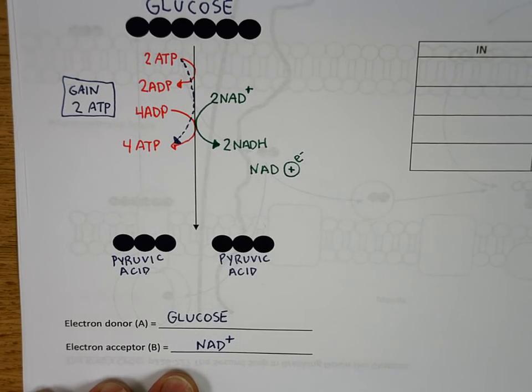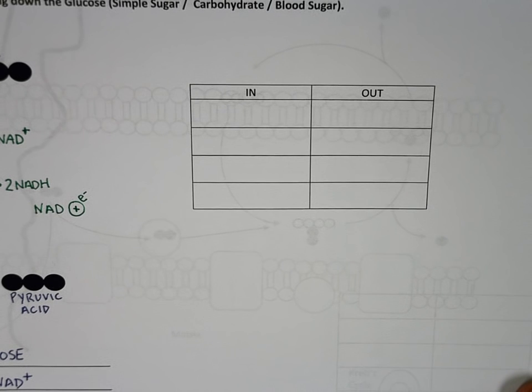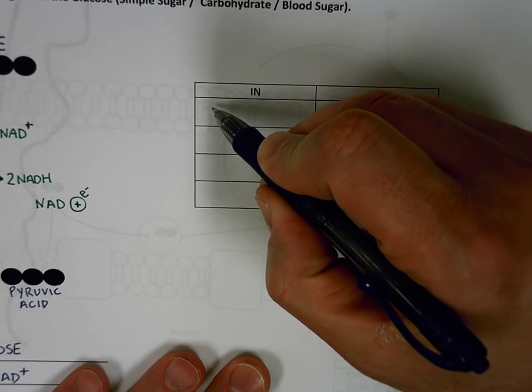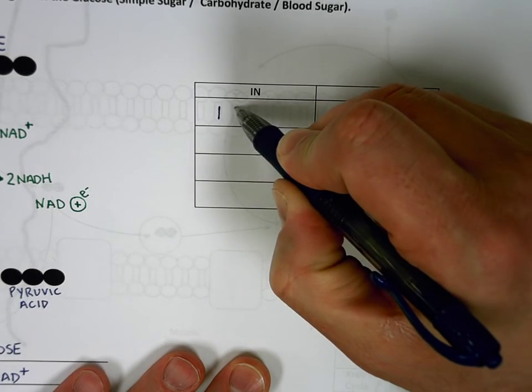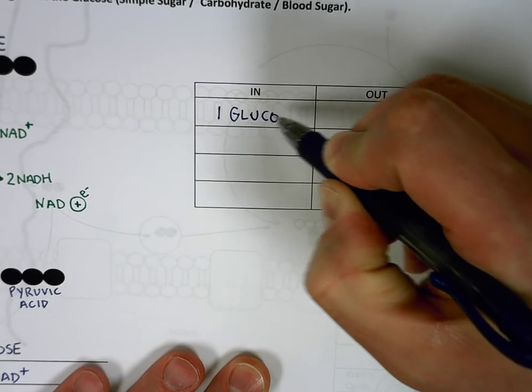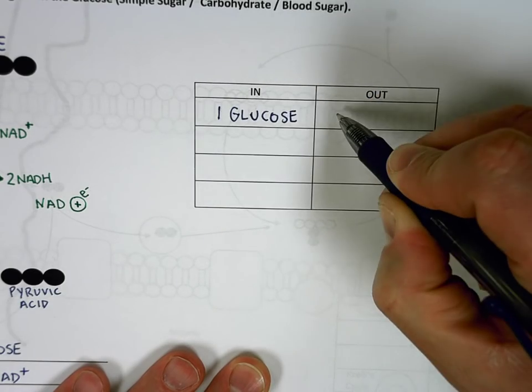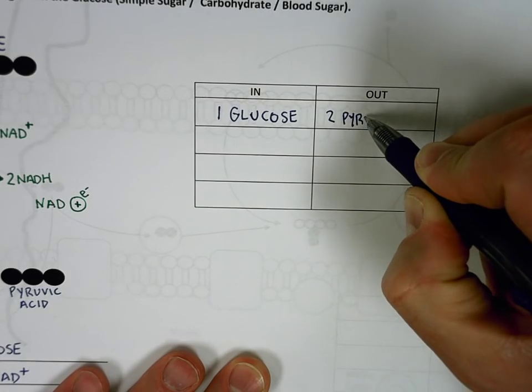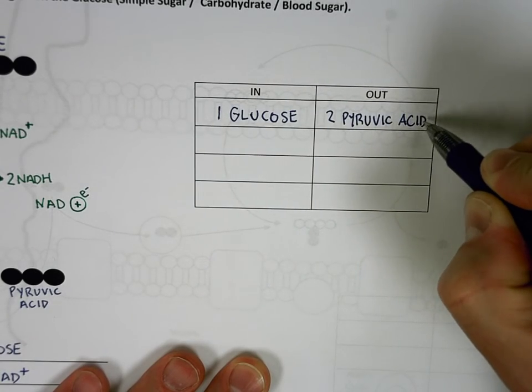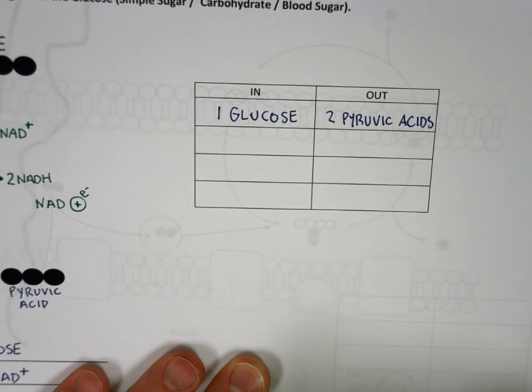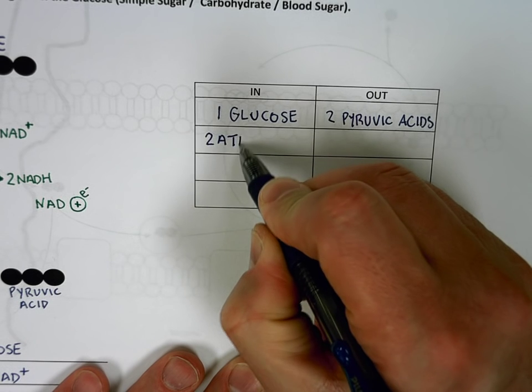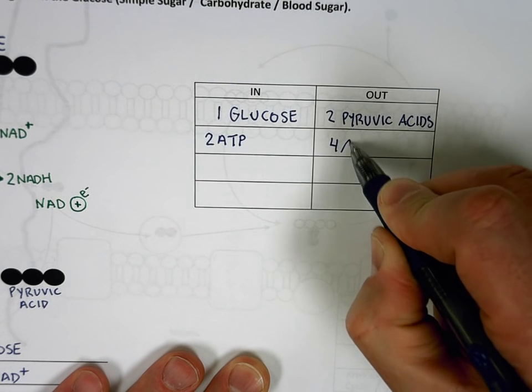We also like to take a little tally of what went into this story and what came out. From this little table, we started with one glucose and we ended up with two pyruvic acids. We had to put in two ATPs and we got four ATPs out.